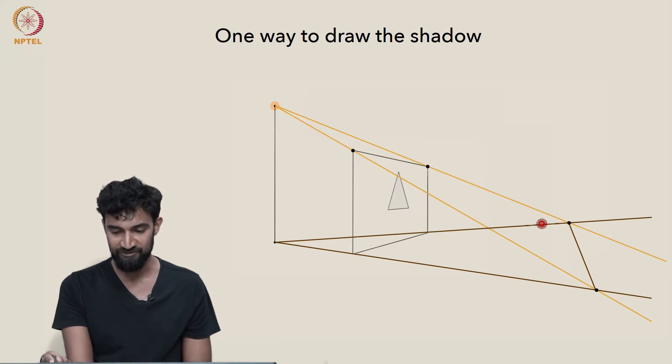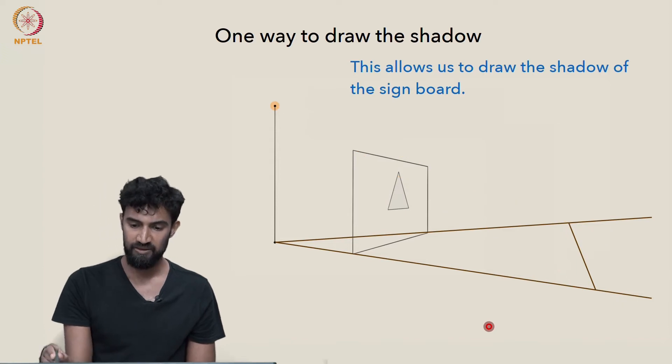So, not bad. We've gotten the full shadow of the sign board. So, I'll just erase all my projection lines and we can see it as a shadow. It's an actual shadow of the sign board.